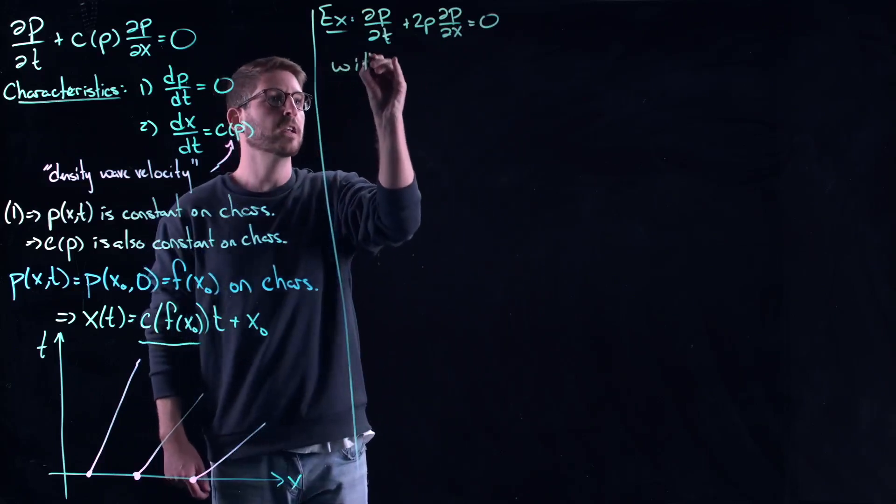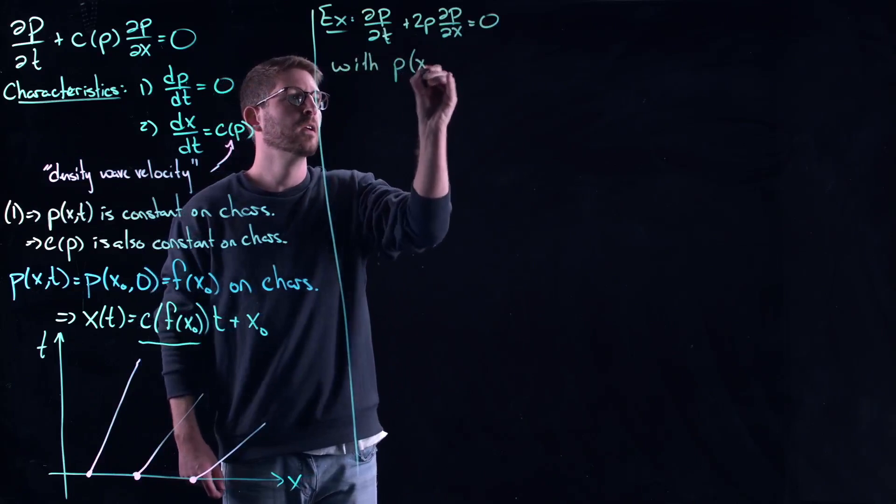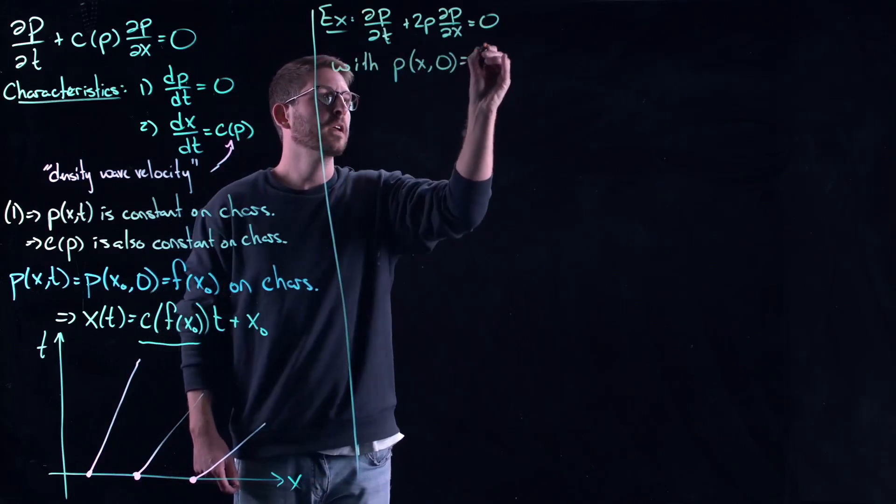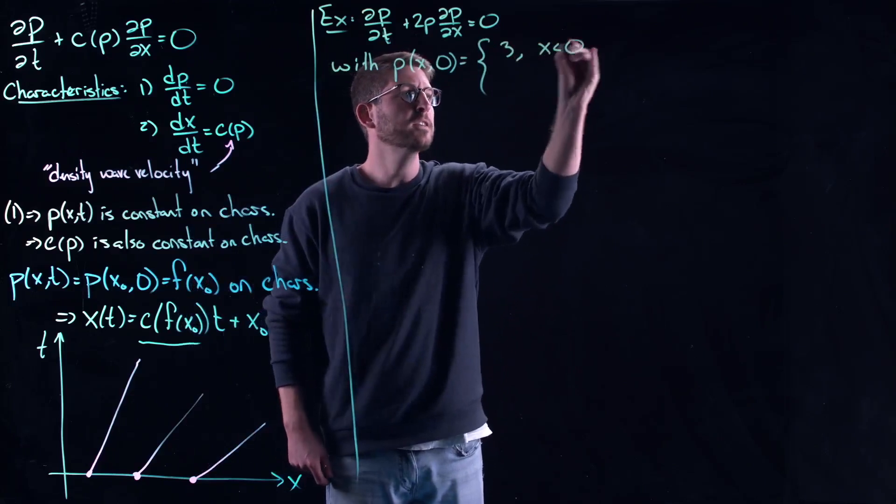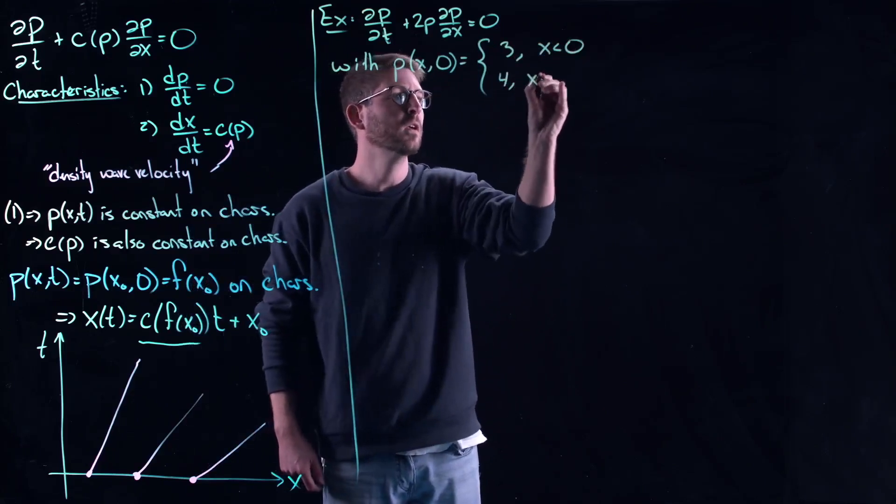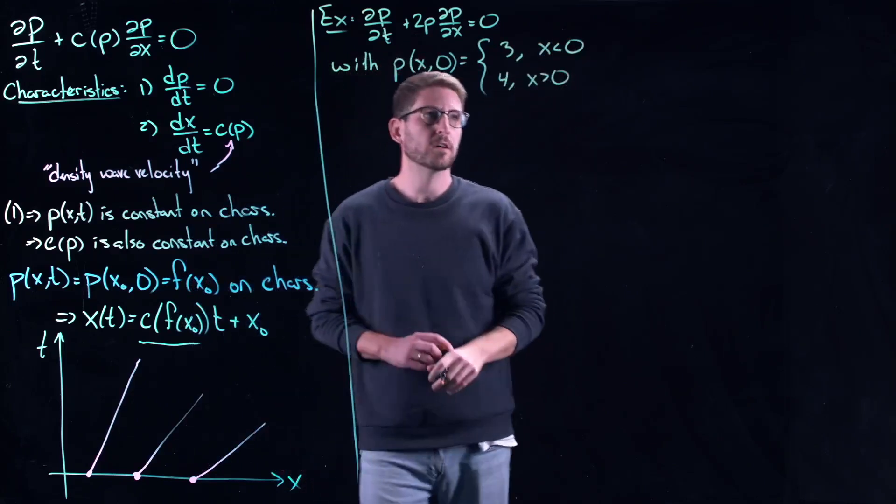And let's also look at an initial condition. Here's my initial condition: it's going to be 3 if you're behind 0, and it's going to be 4 if you're ahead of 0.